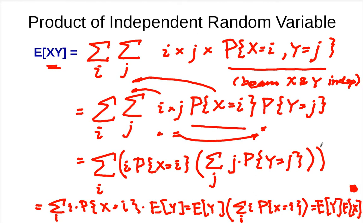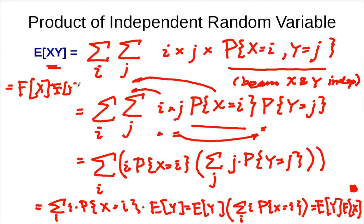So for the product, if X and Y are independent, we have that E[XY] equals E[X] times E[Y].